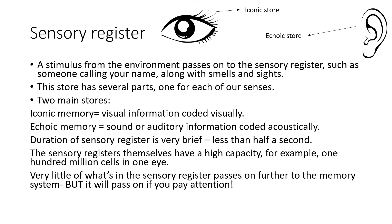Iconic memory stores visual information, which is coded visually. Echoic memory stores sound or auditory information, which is coded acoustically. The duration of the sensory register is very brief — less than half a second. The sensory registers have a high capacity: there are 100 million cells in one eye alone. Very little of what's in the sensory register passes on to the memory system, but if you pay attention, it will pass on.